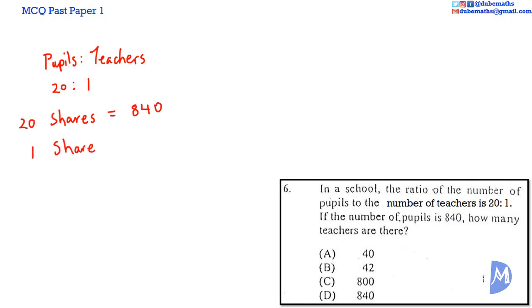We want to find out what is one share. One share, which is the number of teachers, is equal to 840 divided by 20. Ten into 840 is 84, ten into 20 is 2. 84 divided by 2 is equal to 42. 42 teachers. The answer is B.